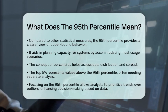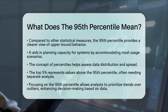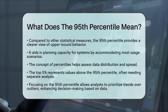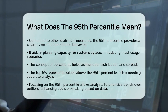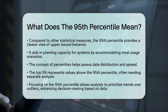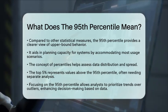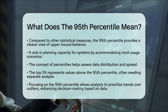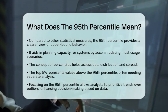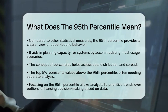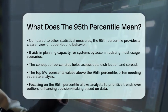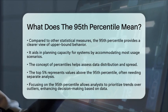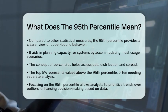The top 5% represents values above the 95th percentile, often requiring separate analysis. By focusing on the 95th percentile, analysts can prioritize actionable trends over anomalies, making it a key component in descriptive statistics, especially in measurement-driven fields. Understanding this concept can help you make better decisions based on data.